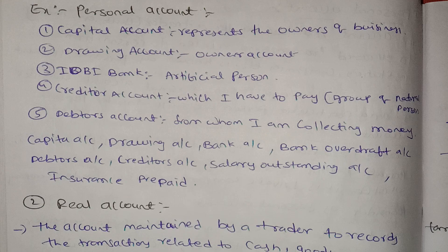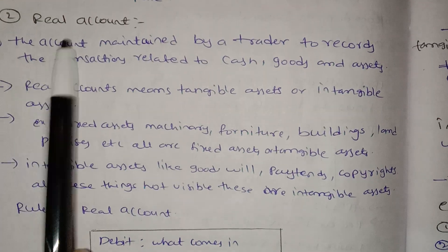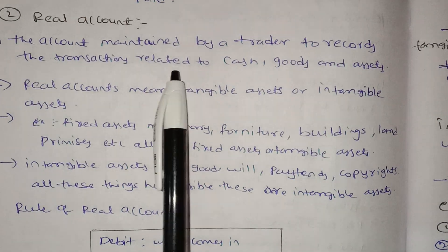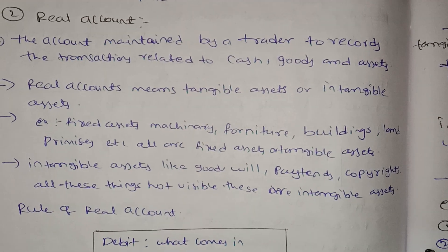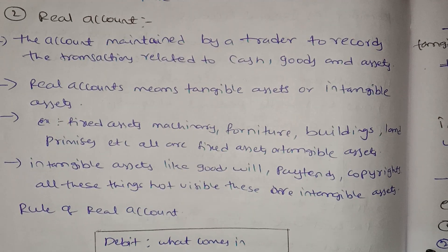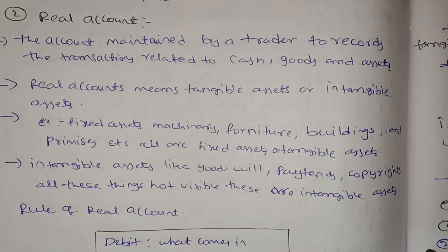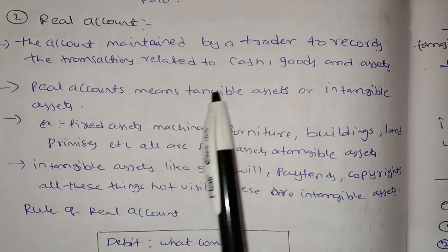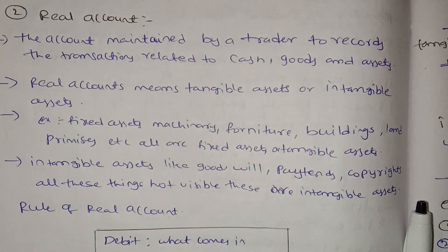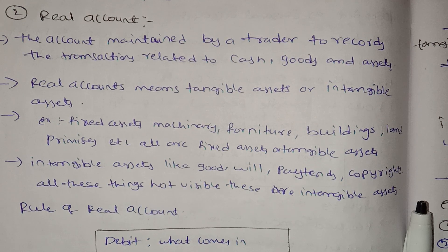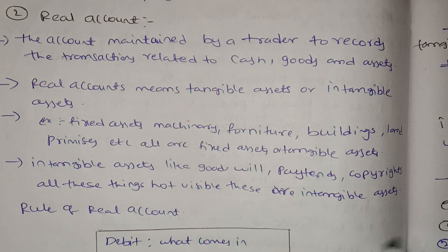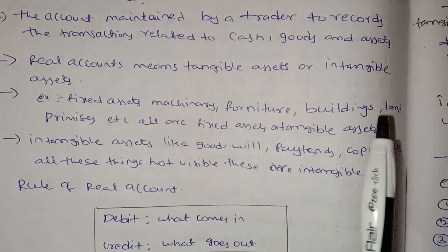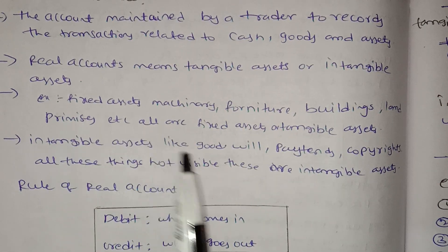Real account is the account maintained by a trader to record transactions related to cash, goods, and assets. Fixed assets — if we maintain a real account, the transactions include cash, goods, and fixed assets. Real account means tangible assets and intangible assets. Tangible assets include furniture, building, land, premises, etc.